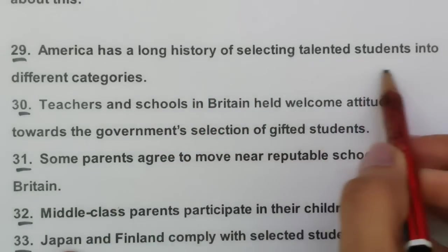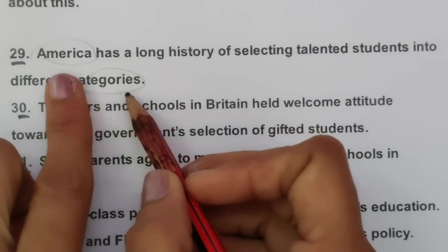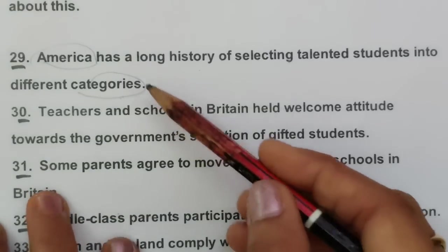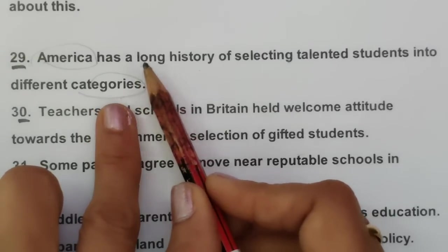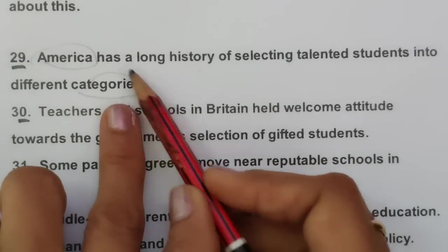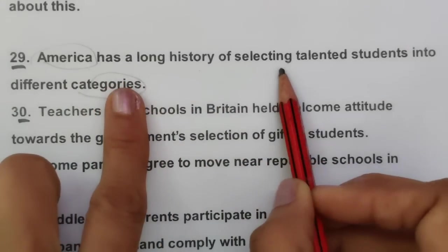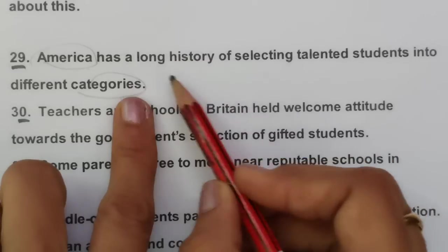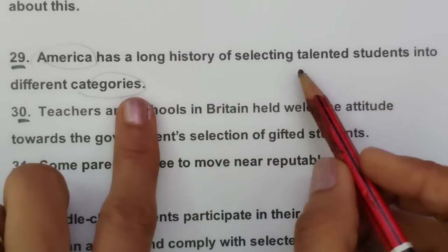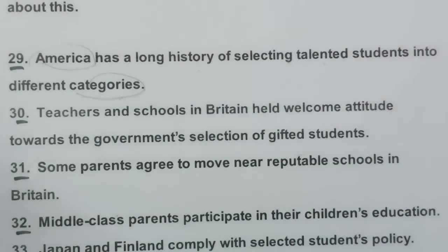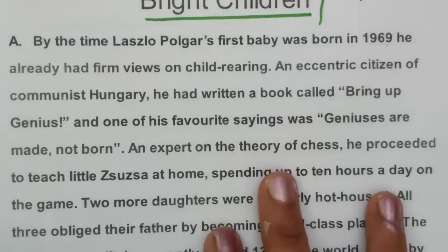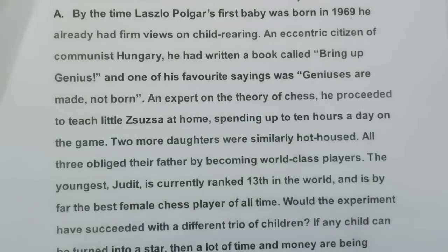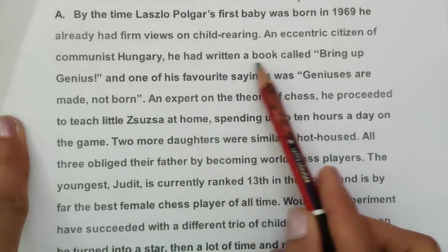Question 29: 'America has a long history of selecting talented students into different categories.' The keywords 'America' and 'categories' will take us to the location in the passage. Since this is the first question, we look in the first paragraph naturally. We find: 'talent searches, using test results and teacher recommendations to select children for advanced school courses, summer schools, and other extra tuitions.'